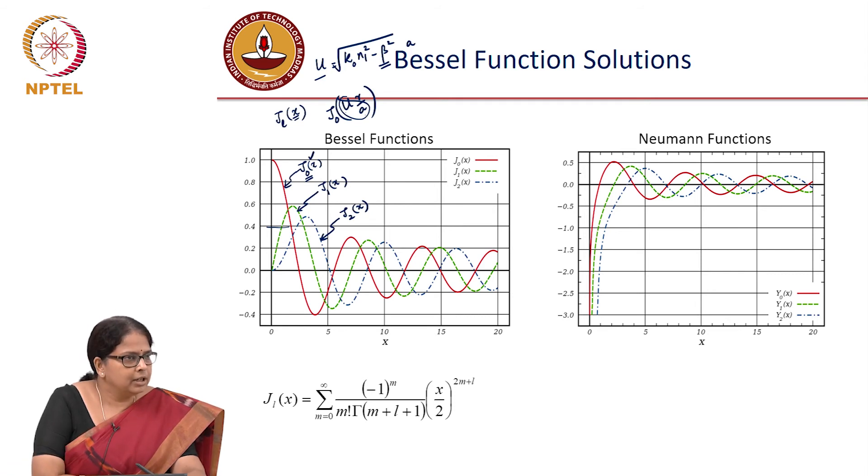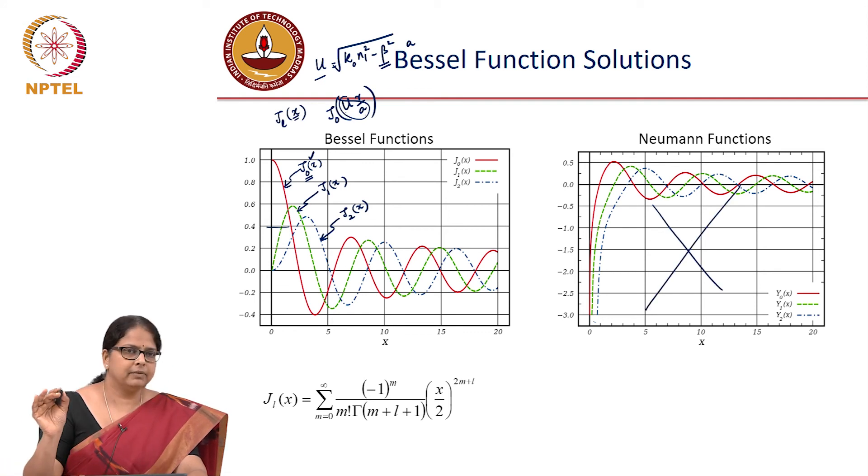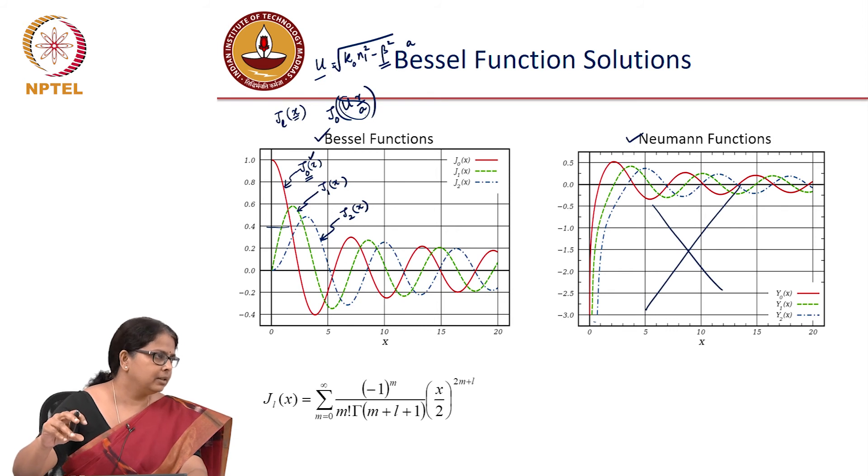This is how the Neumann functions look. So, do I need to say that my answer is a Bessel function or a Neumann function? Can I have this as a physical solution for a mode? What do you see in particular about this function? At r equal to 0, x equal to 0 means r equal to 0, what is the value of the function? It is going to minus infinity. So, it means that my electric field will go to minus infinity at the center of the fiber. Is that physically feasible? That is not.